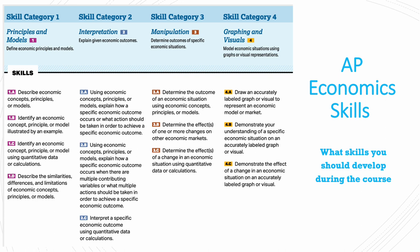Throughout this course you will develop certain AP economic skills. There are four categories. The first one is principles and models, where you would define economic principles and models, describe and identify these economic principles, concepts, and models also using quantitative data or calculations, and describe similarities, differences, and limitations of these economic concepts, principles, and models.